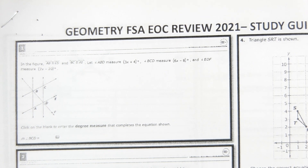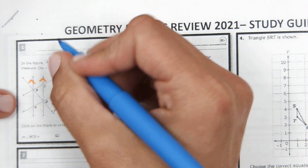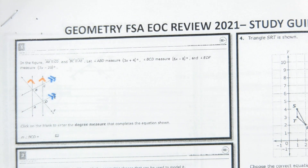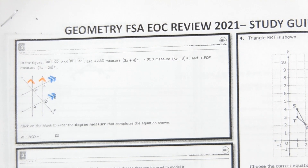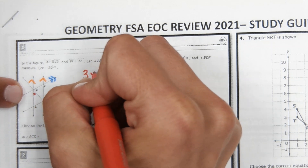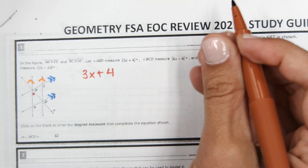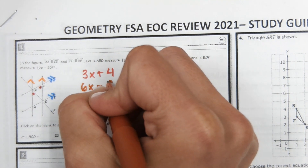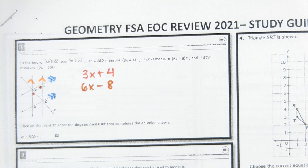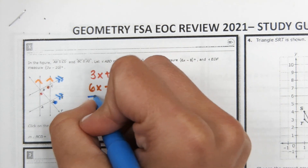In the figure, AB is parallel to CD and BC is parallel to AD. The measure of angle ABD is 3x plus 4, angle BCD is 6x minus 8, and angle EDF is 7x minus 20.